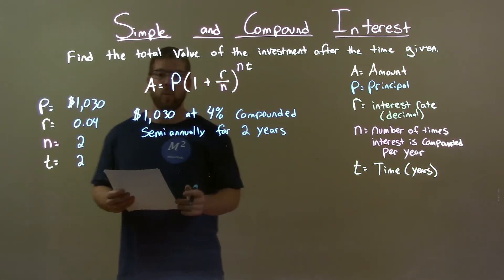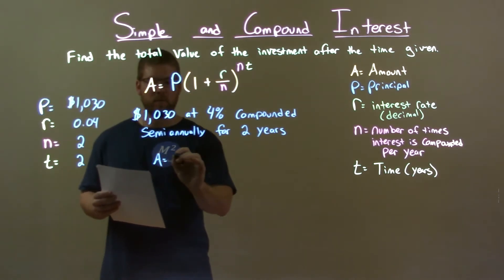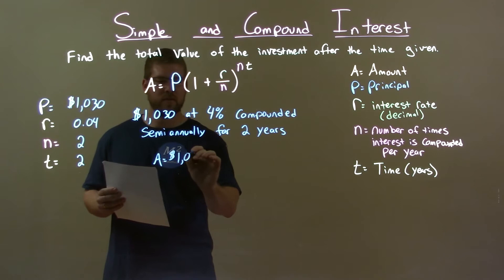Alright, so with that information, I just plug all of that into my formula. A equals my principal, 1,030,